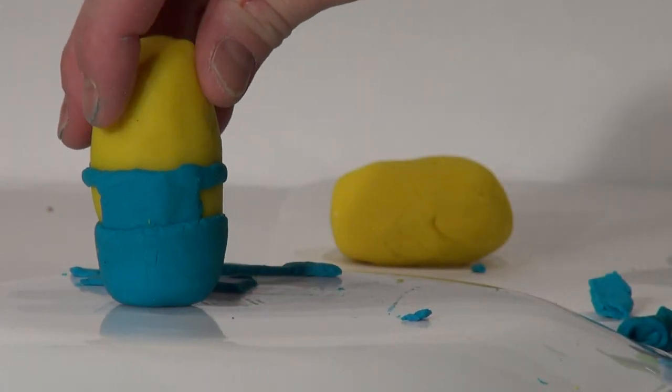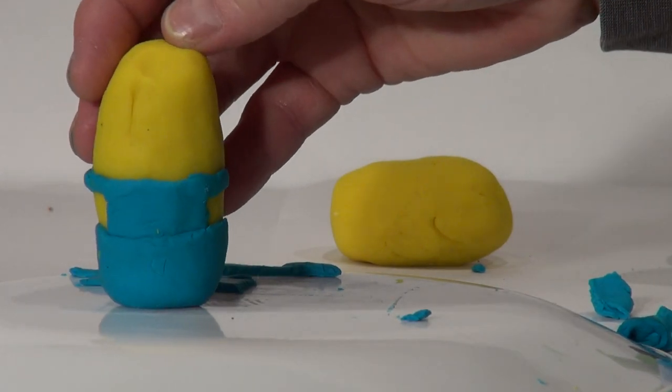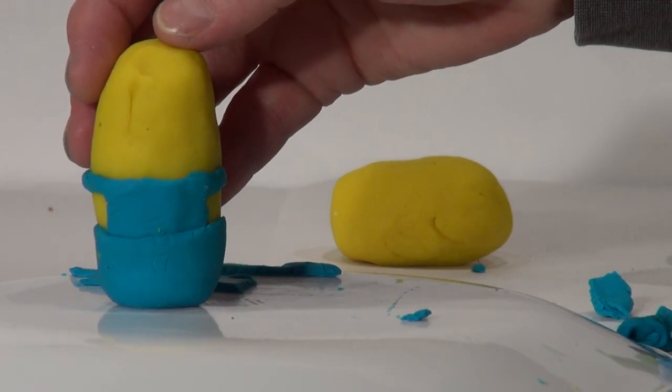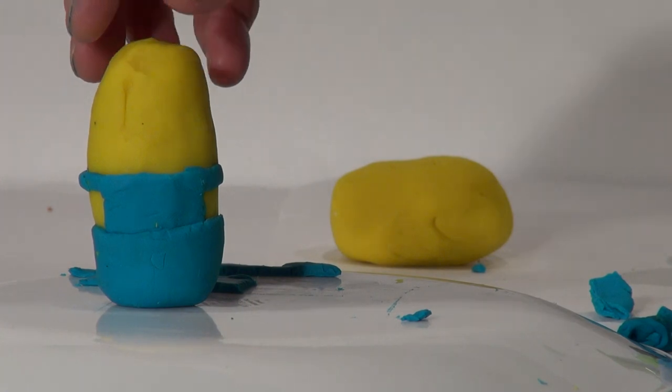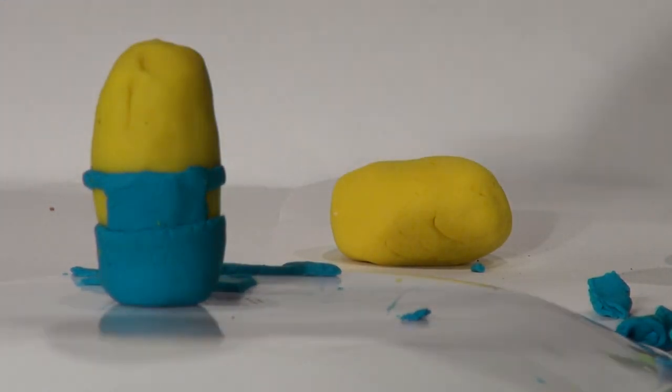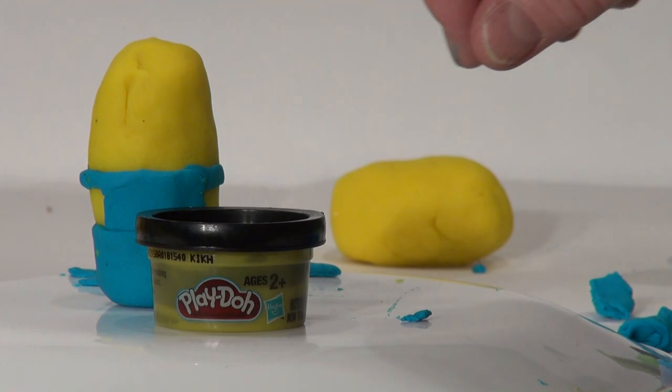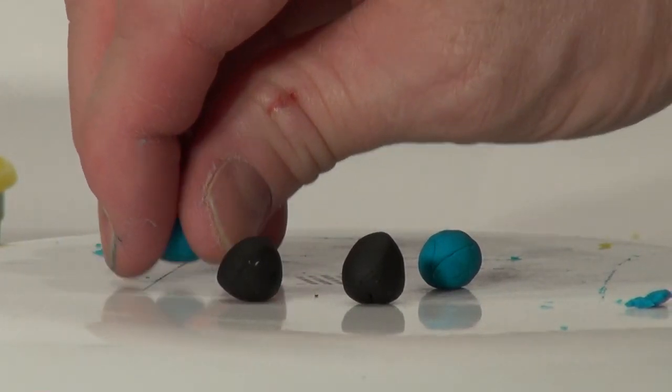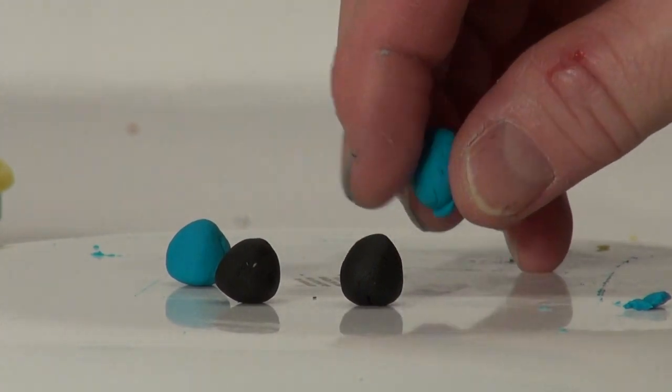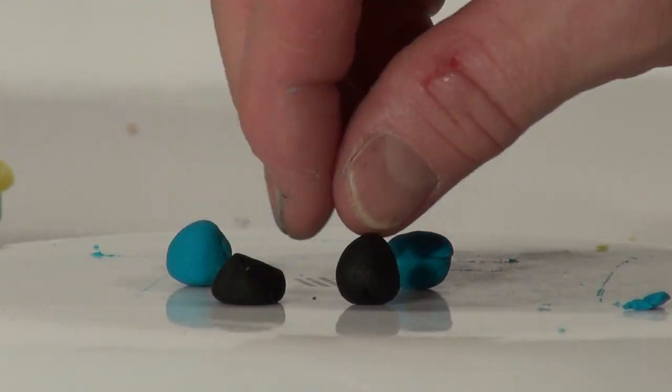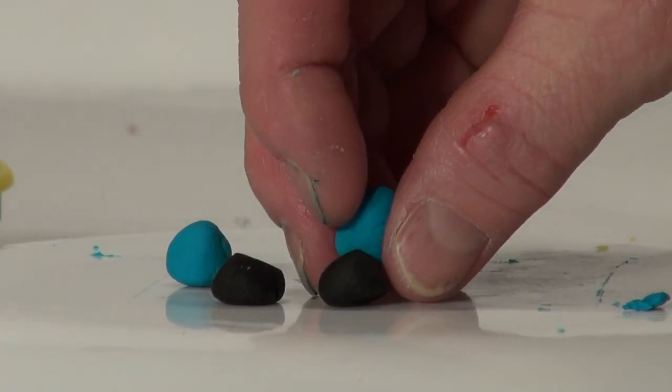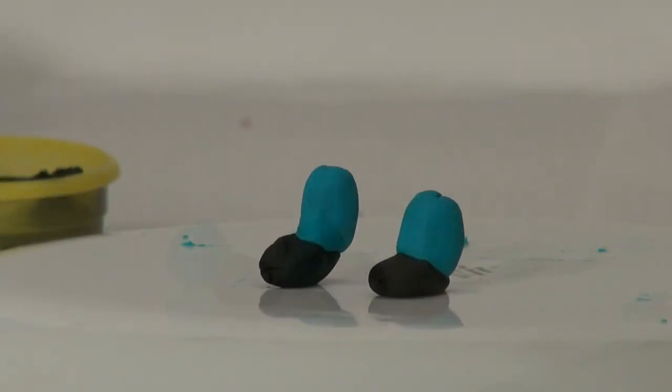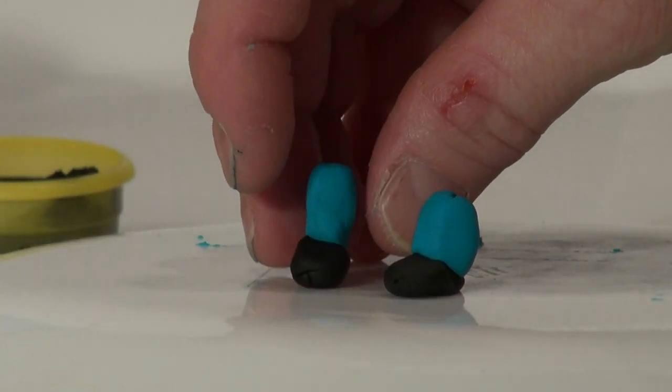Now we can work on adding his shoes and his legs. The shoes are black but the legs are blue too. You just get some blue balls and roll them, and the black you form into a leg and a foot, and you add that to the bottom. There's his two legs and two feet.